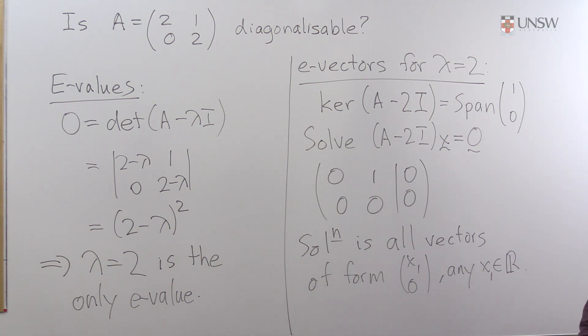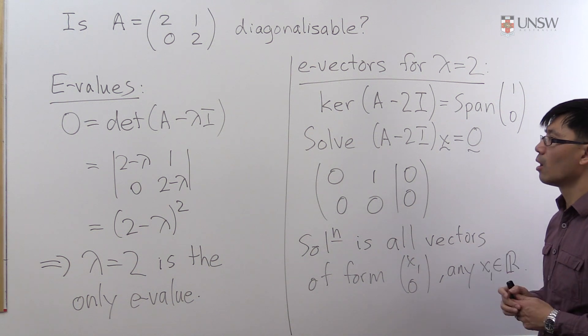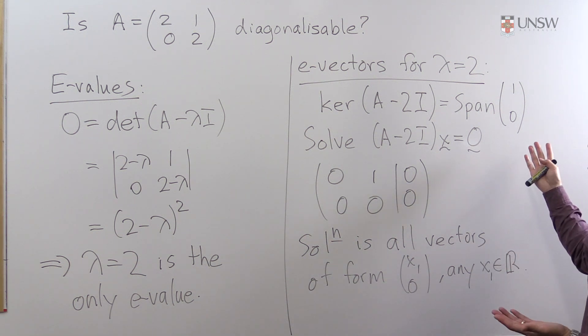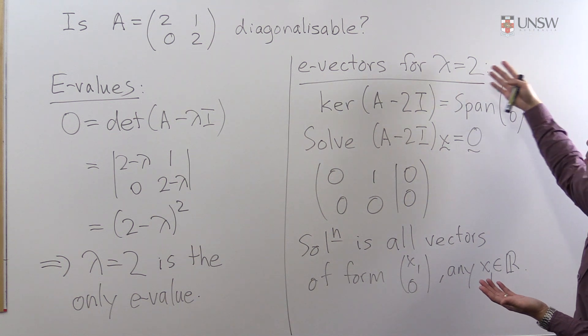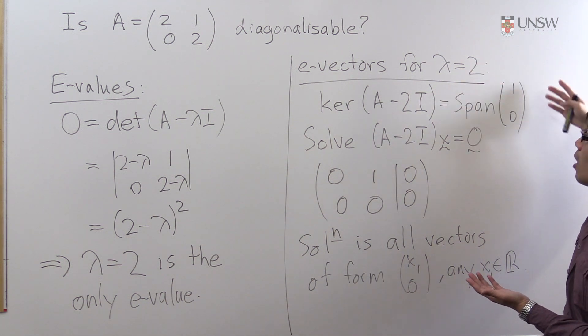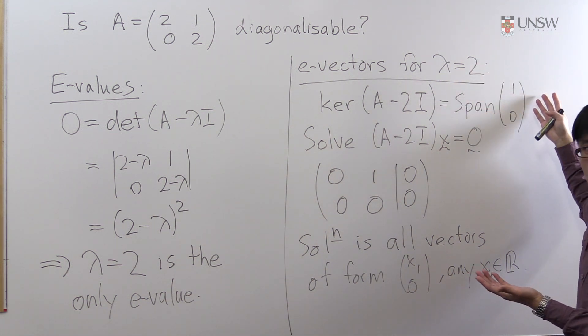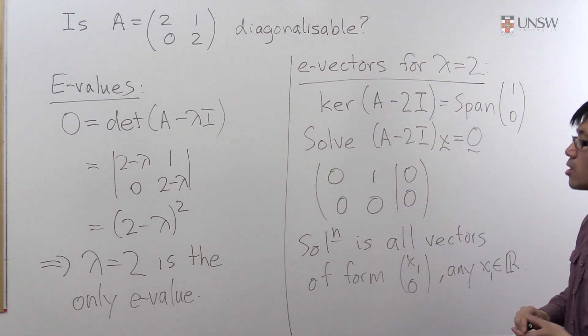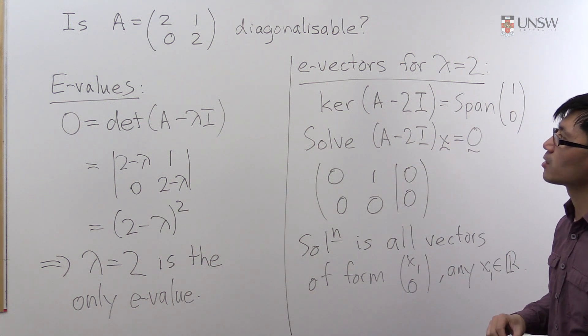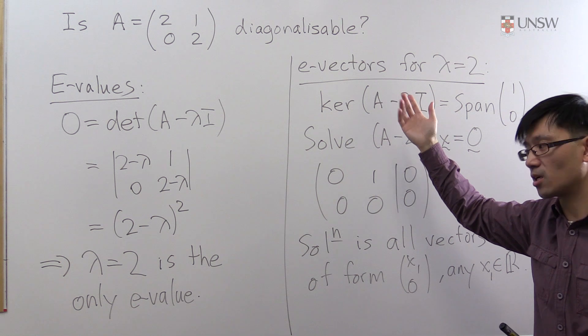So if we want a basis of eigenvectors, what do we need? We need to have two linearly independent vectors from this one-dimensional subspace, which is not possible. So since we don't have a basis of eigenvectors, we see that A is actually not diagonalizable.